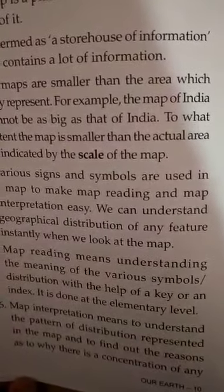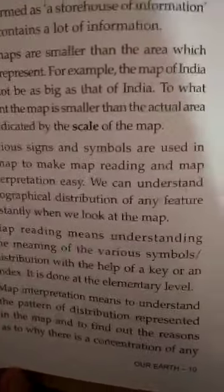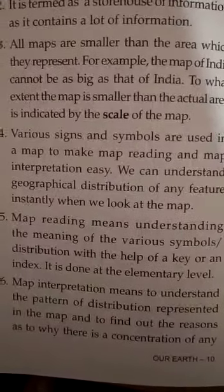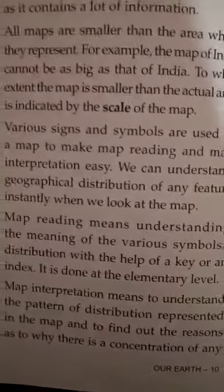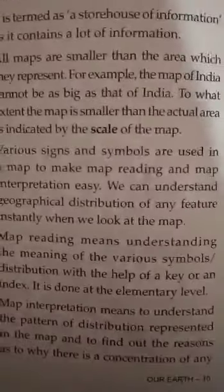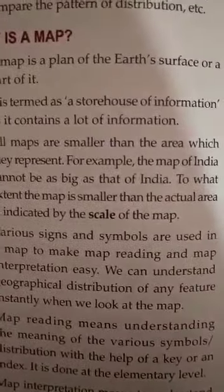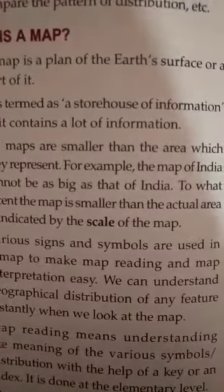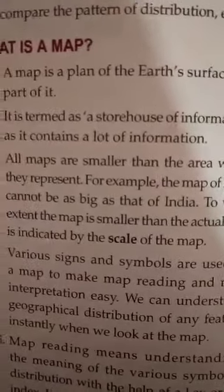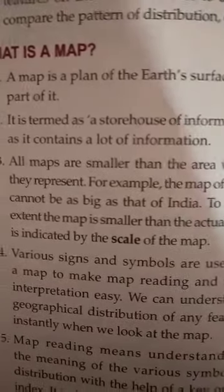Map interpretation means understanding the pattern of distribution represented in the map and finding out why there is a concentration of any feature at a particular place. For example, if green color is used on a map, it gives us an idea that that area has some kind of vegetation.